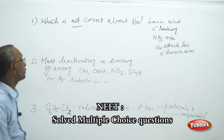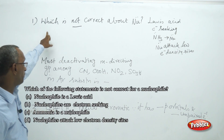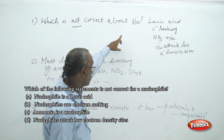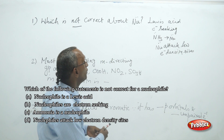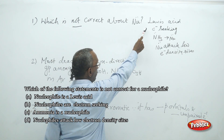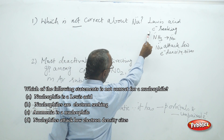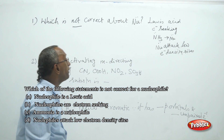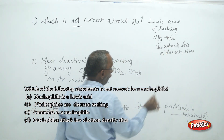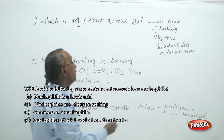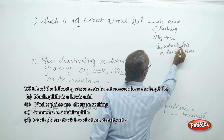We can see some questions. The first question reads: which of the following statements is not correct about a nucleophile? There are four choices. First choice: nucleophile is a Lewis acid. Second choice: nucleophiles are electron-seeking species. Third choice: ammonia is a nucleophile. Fourth choice: nucleophilic attack takes place at low electron density sites.